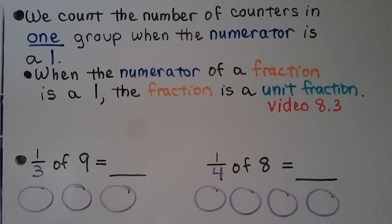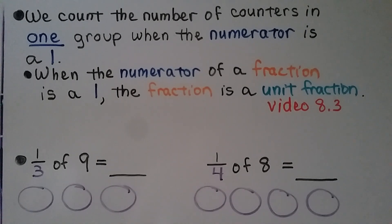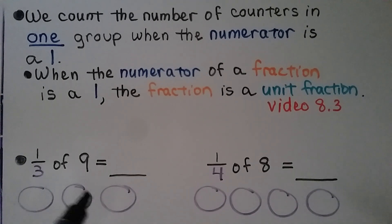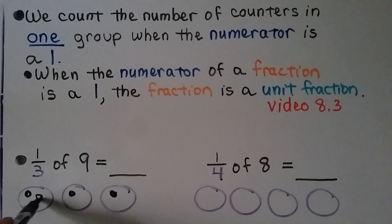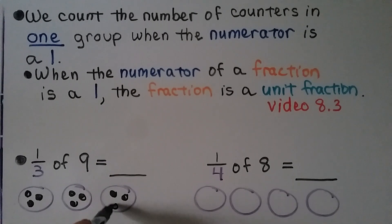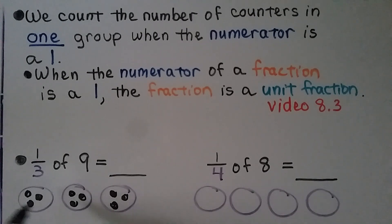We count the number of counters in one group when the numerator is a one. When the numerator of a fraction is a one, the fraction is a unit fraction — we learned about that in lesson 8.3. If we need to find one third of nine, we know to put three groups because the denominator is a three. We put one in each group until we get to nine: one, two, three, four, five, six, seven, eight, nine. One of the groups has three, so we know one third of nine is three.